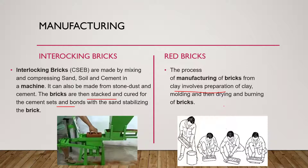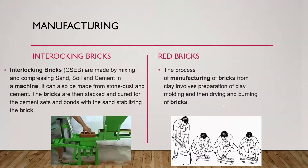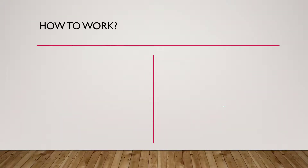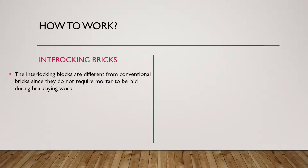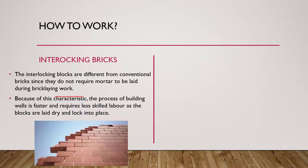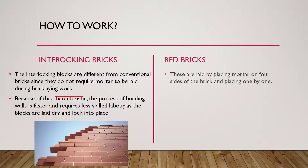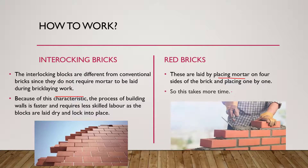Red bricks are manufactured through preparation of clay, molding, drying, and burning. Interlocking blocks differ from conventional bricks in that they do not require mortar during brick laying, making the wall-building process faster and requiring less labor. Red bricks are laid by placing mortar on four sides and placing them one by one, which takes more time.